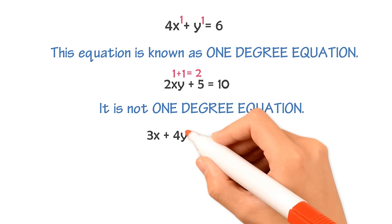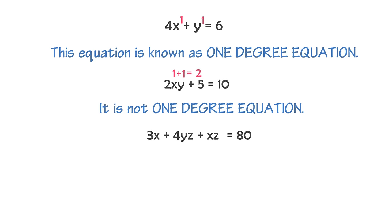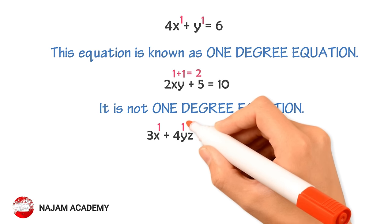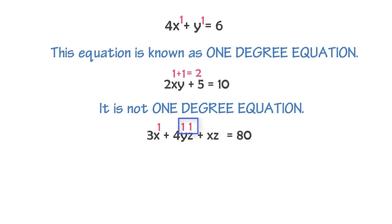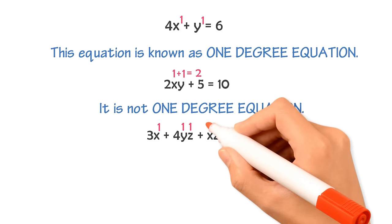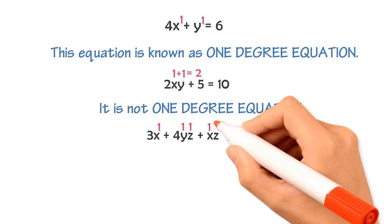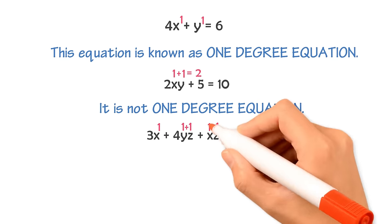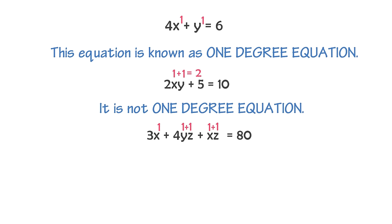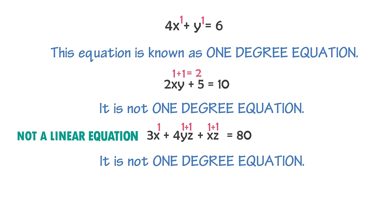Again, if I write 3x plus 4yz plus xz is equal to 80, in this equation there are four terms. The power of the first term x is 1. The power of the second term: y is 1 and the power of z is also 1. Hence, 1 plus 1 is equal to 2. Thus, the power of the second term is 2. So we can say that the highest power of this equation is 2. Hence, it is neither a one-degree equation nor a linear equation.